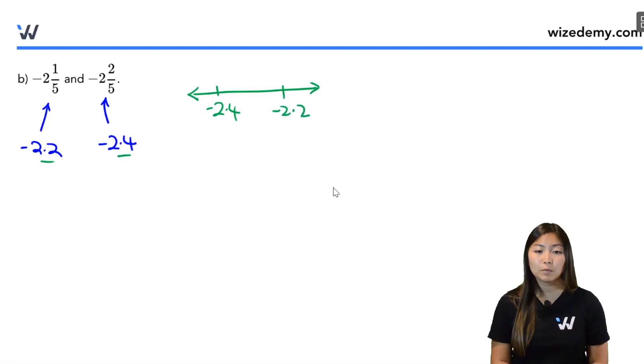Now we need to find three decimals between them and there's a lot of them, for example negative 2.3, negative 2.35, negative 2.37, negative 2.38, negative 2.389, a bunch of them. So those are just three examples.